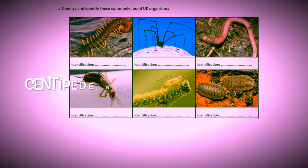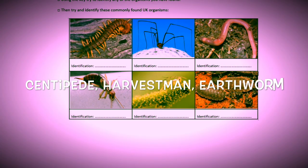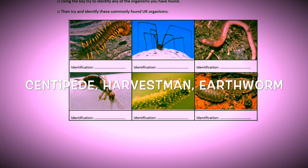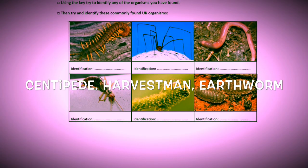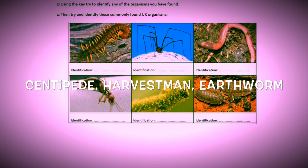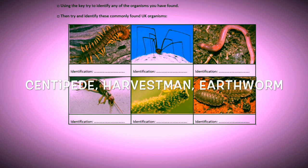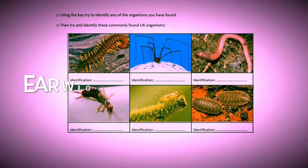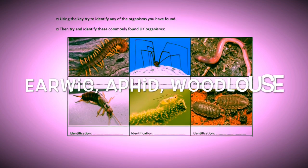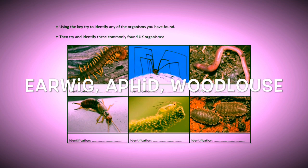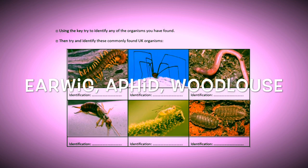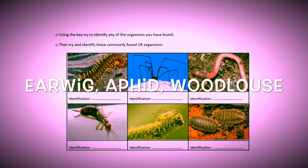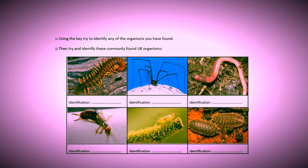The answers on the top row from left to right are centipede, harvestman, and earthworm — worm would be fine. The answers on the bottom row from left to right are earwig, aphid, and woodlouse.